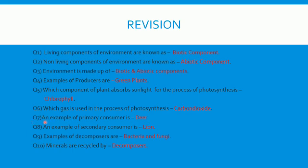Question 7: an example of a primary consumer. Answer is deer — but this is not the only answer. Cow and buffalo are also there. Primary consumers are those animals who directly feed on plants, so you can give other examples also. Question 8: an example of a secondary consumer. I have given lion, but you can give your own answer as well. Secondary consumers are those animals who feed on primary consumers — for example, lion eats deer.